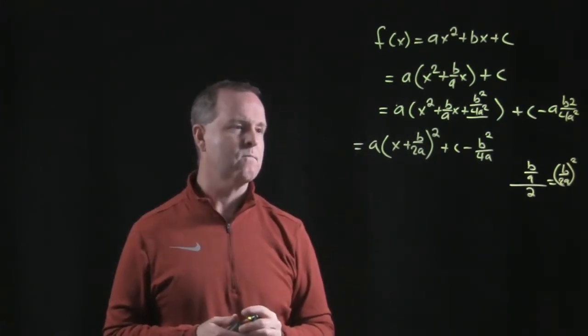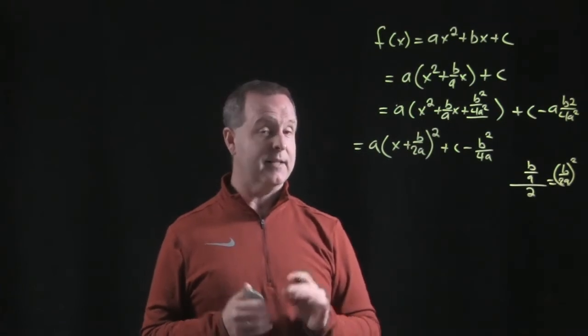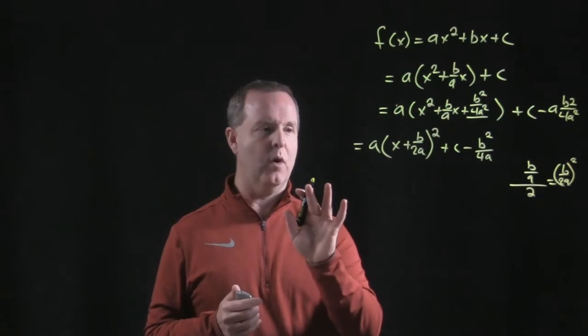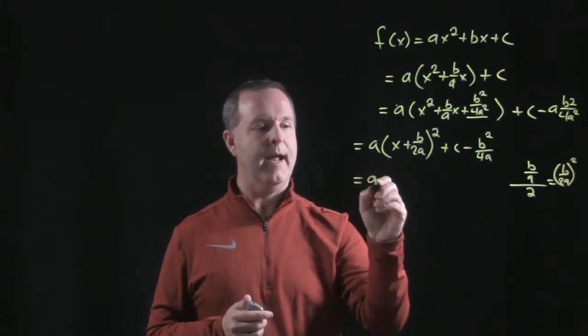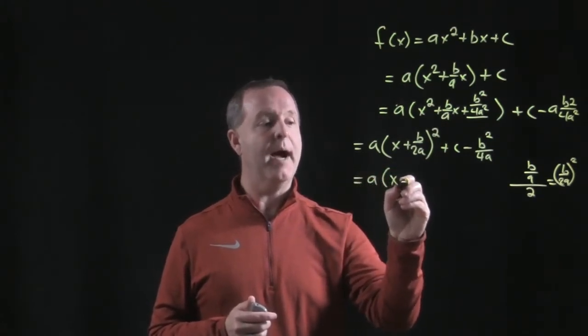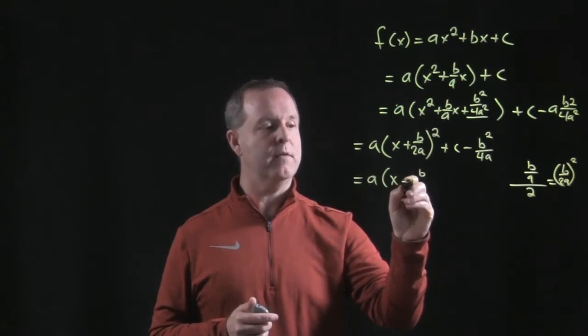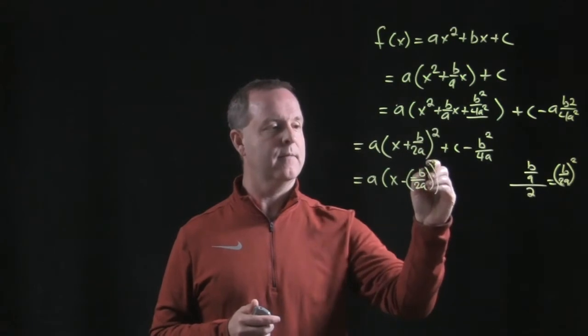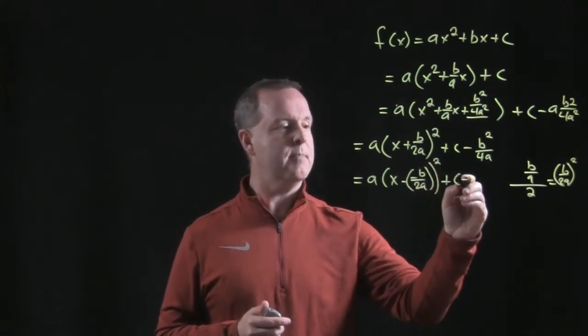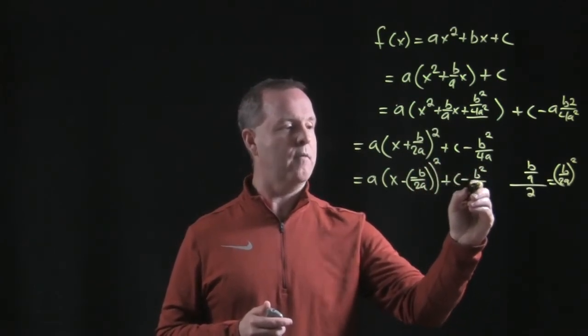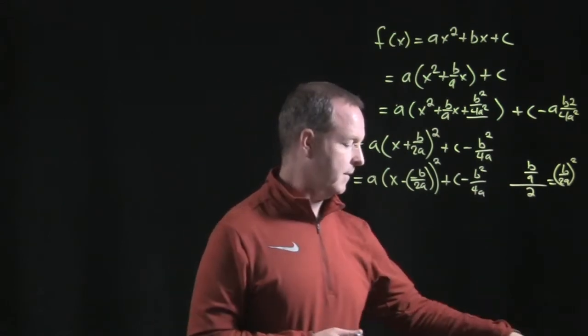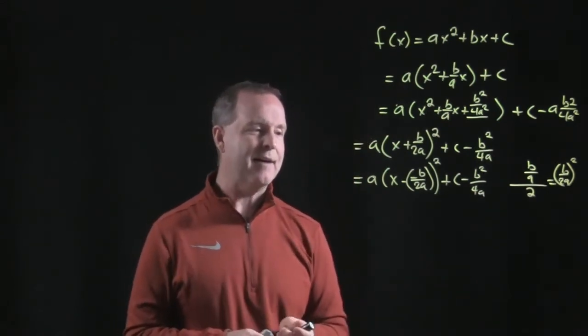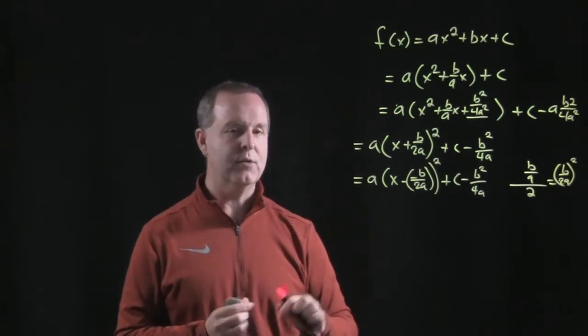All right, getting closer to a look of form that I have here. So let me just do one more thing here. a times x minus, minus b over 2a. You'll see why here in a second, squared, plus c minus b squared over 4a. Now what's kind of fascinating here is I have very closely to this form.